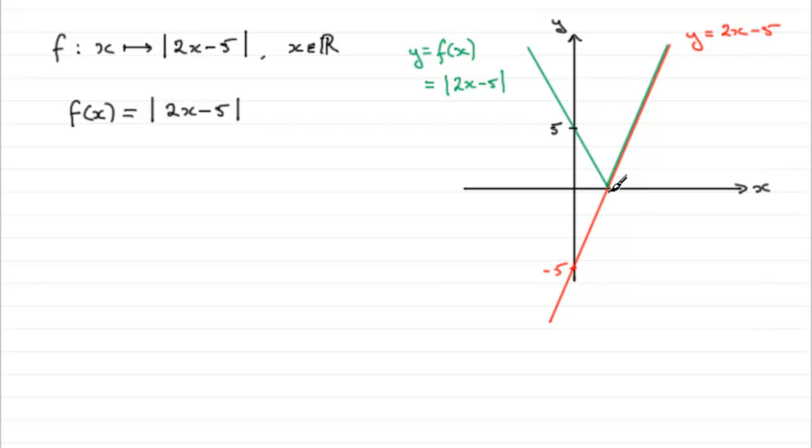And when it comes to this point here, this is the point where y or f(x) equals 0. So that's going to be when 2x minus 5 equals 0. So you can see that when 2x minus 5 equals 0, you've got that 2x equals 5. And therefore if you divide both sides by 2, you get x equals 5 over 2. So this point here then is x equals 5 upon 2.